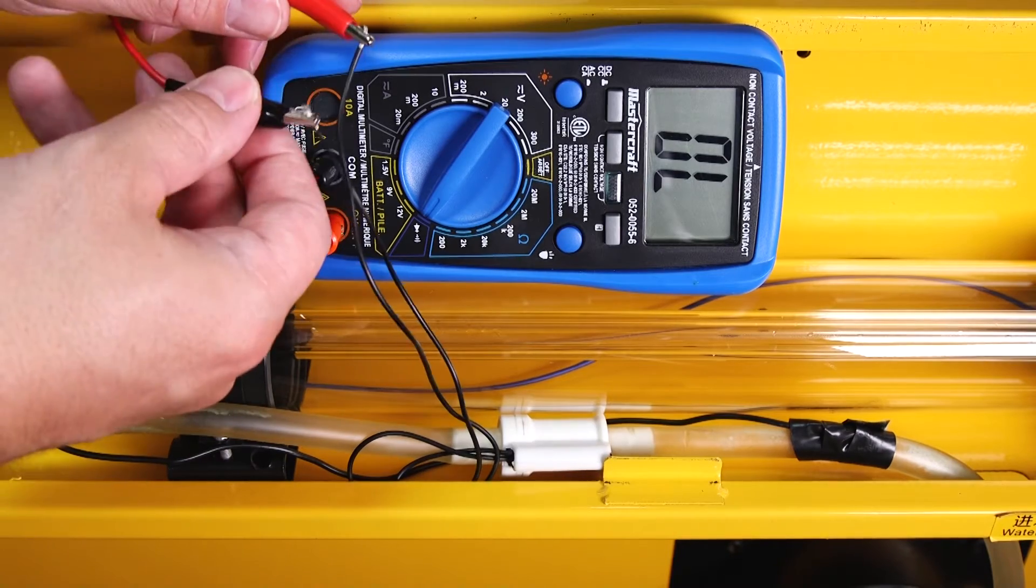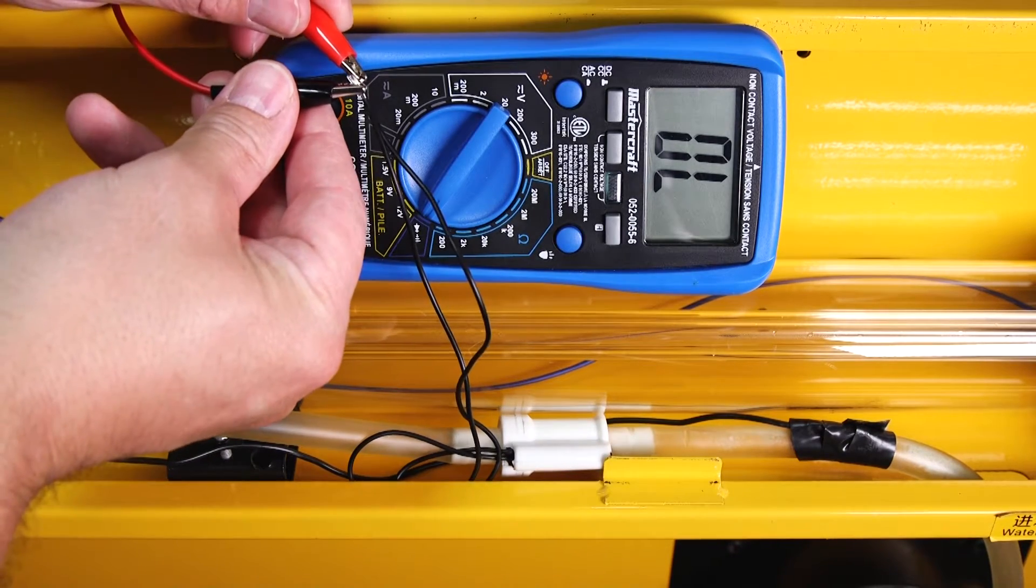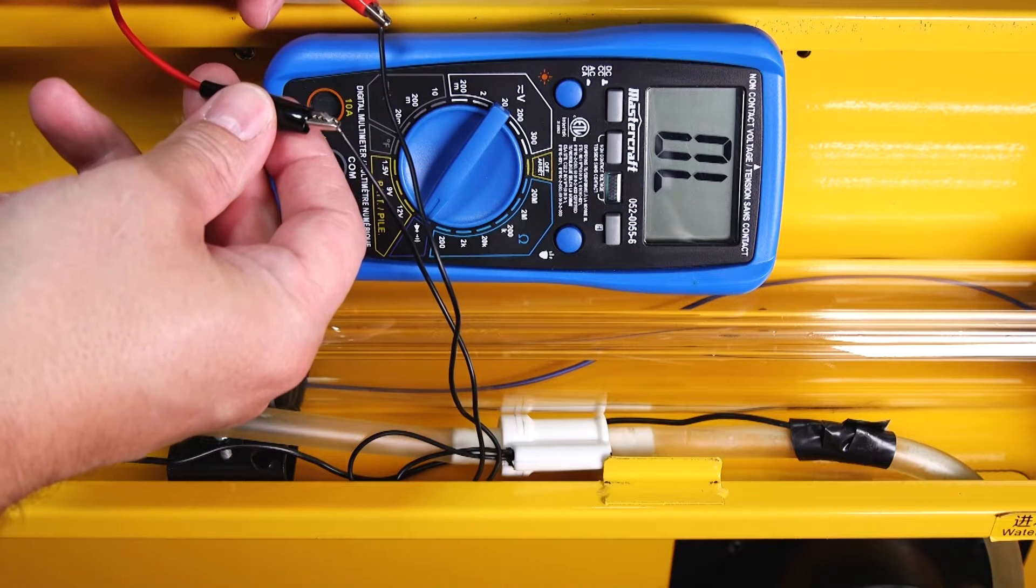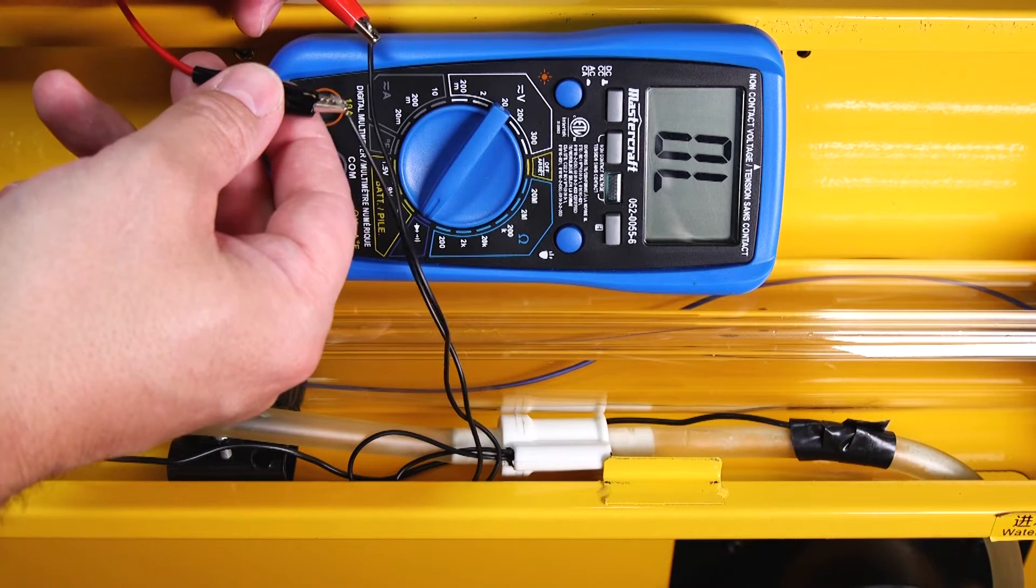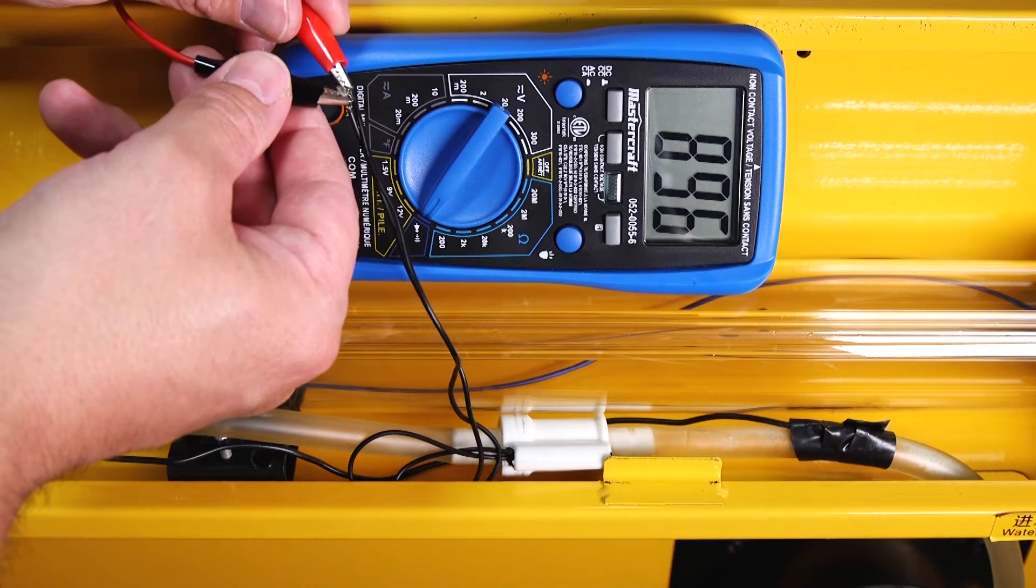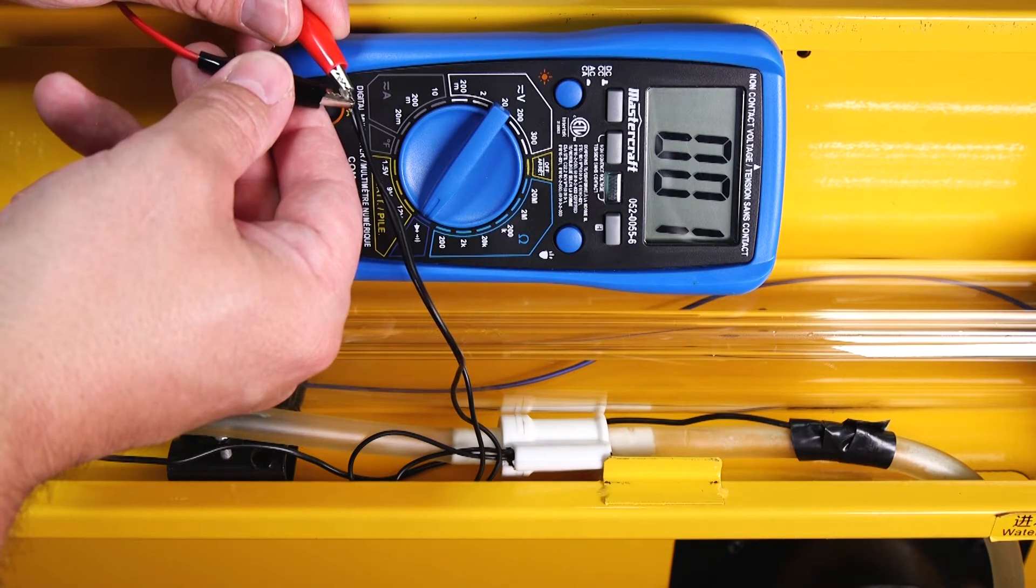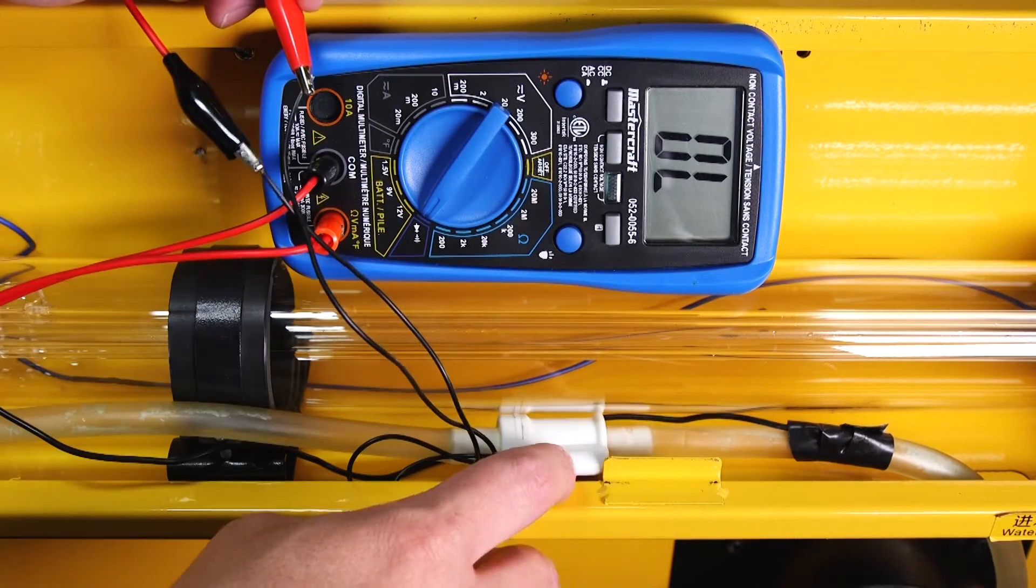Now I've already tested mine and I know that it's failed. If you test yours and your multimeter acts like the circuit has closed after you turn on the water flow switch, kind of like touching the two lead ends together, then you know your water flow switch is okay and your problem is somewhere else.